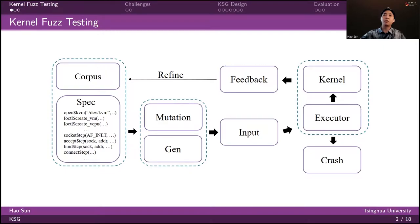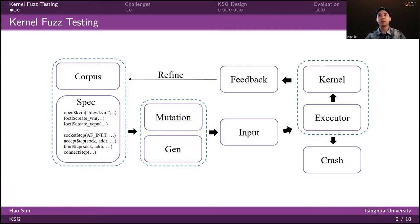First, I'm going to talk about a typical fuzzing workflow. First of all, the fuzzer generates or mutates the input based on the input corpus and system call specification. The input corpus contains a set of high-quality system call sequences, and the system call specification provides further detailed information about system calls — for example, the input structure or the input type of each system call.